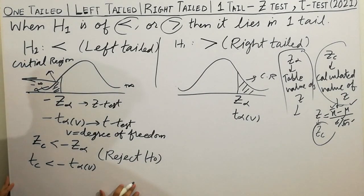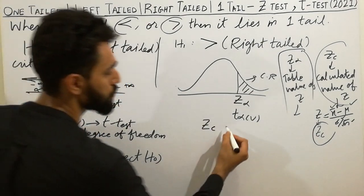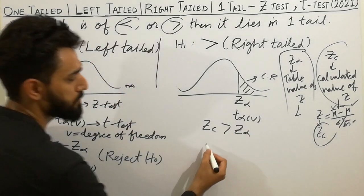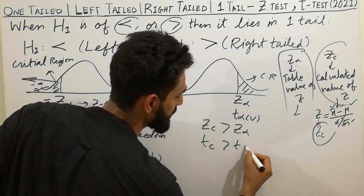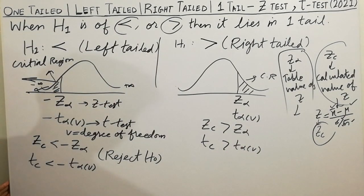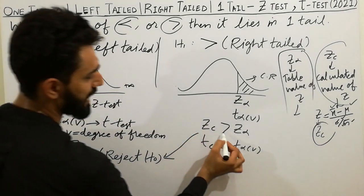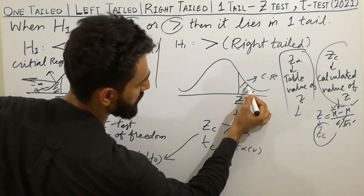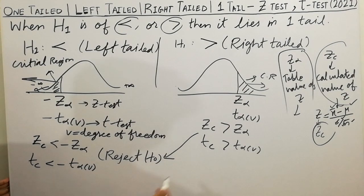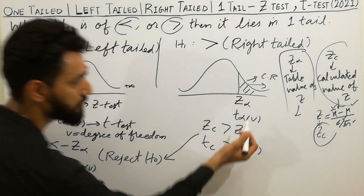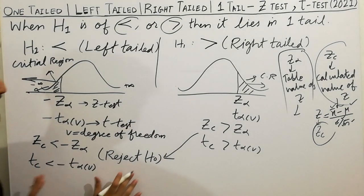Similarly, if the Z calculated value is greater than Z-alpha, and if the T calculated value is greater than T-alpha-V, in both cases we will always reject H0. Because Z greater than Z-alpha means it lies in the right-tail critical region, so we reject H0. Likewise, T calculated greater than T-alpha-V means reject H0.